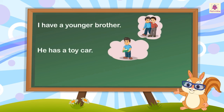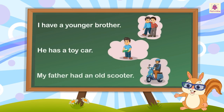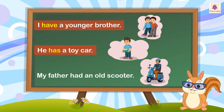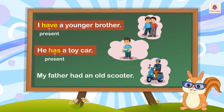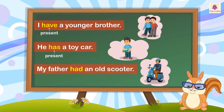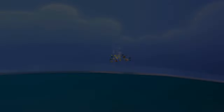Observe these sentences once again carefully. The first two sentences use the verbs has and have, which tell us about now or the present. The third sentence uses the verb had, which tells us about the past.